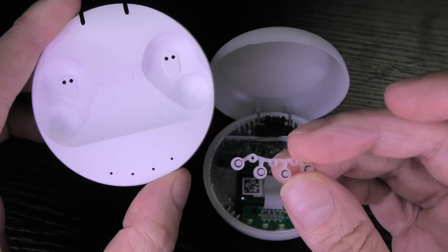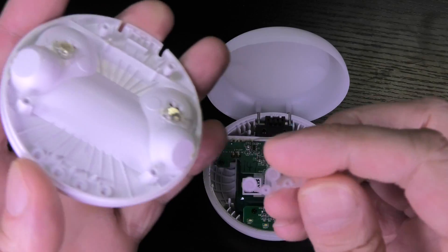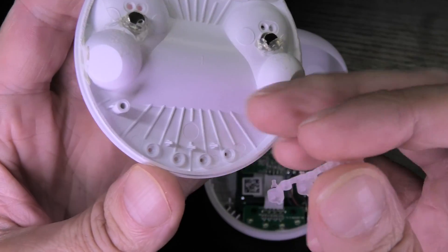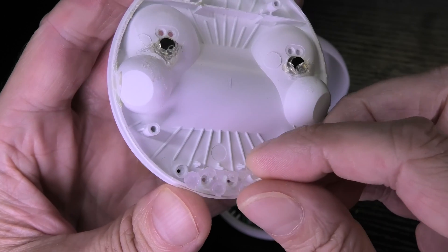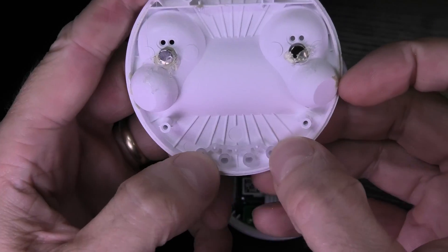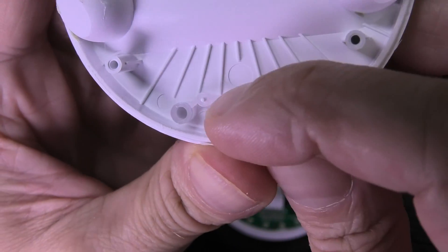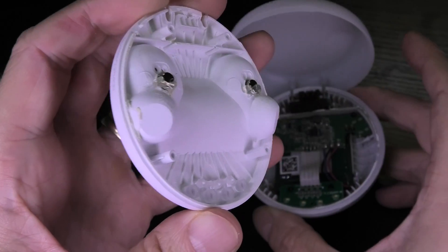So while I was disassembling the charging case this little clear piece of plastic fell off. So I have to put this back into position. This is here for the four charging LEDs. So you can see those light up. And so I am going to press this piece of plastic back into its position.